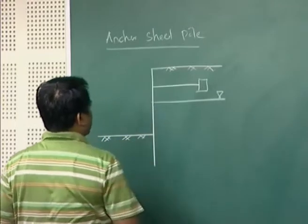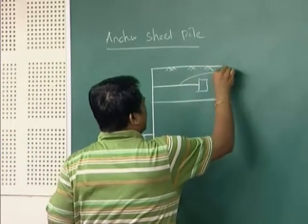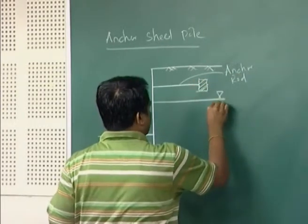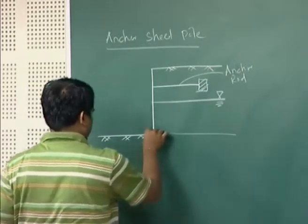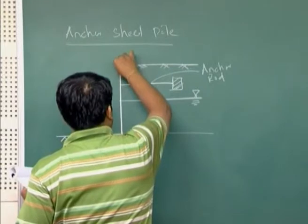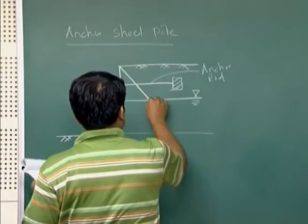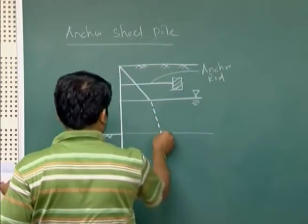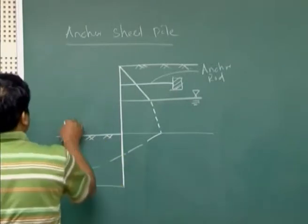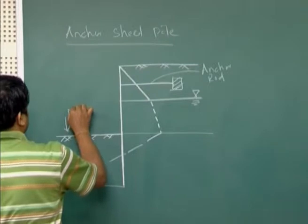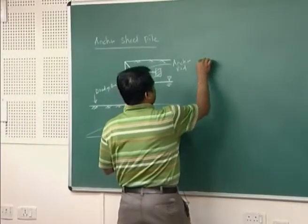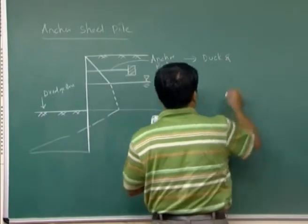Drawing the sheet pile wall: here is the anchor rod, this is the water table. Drawing the pressure distribution diagram, this is a complete anchor sheet pile with the dredge line. This type is particularly used in dock and harbor structures.